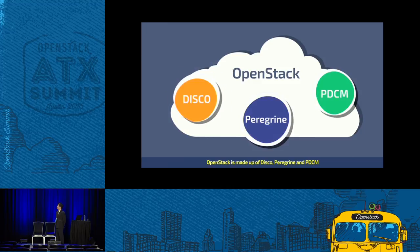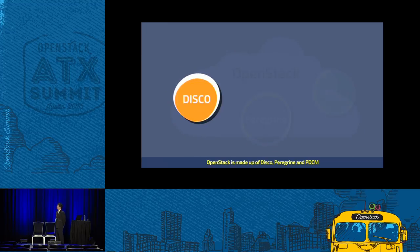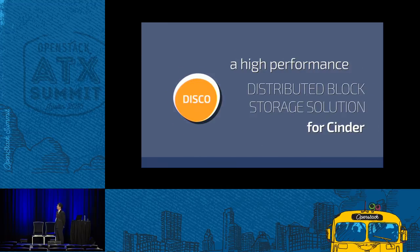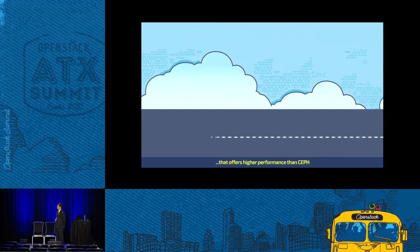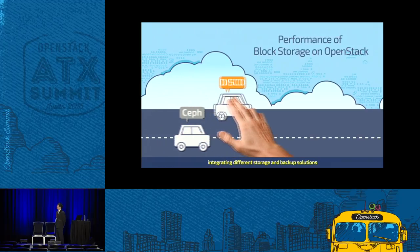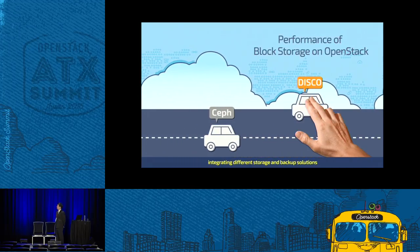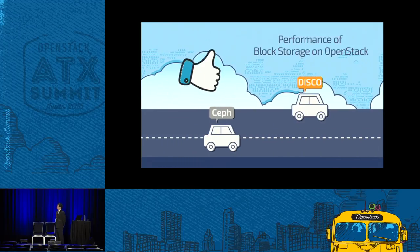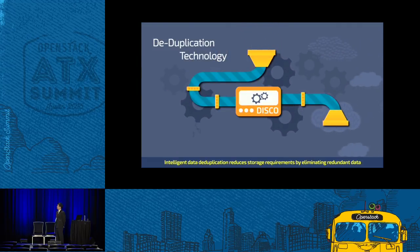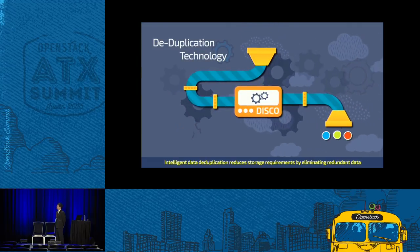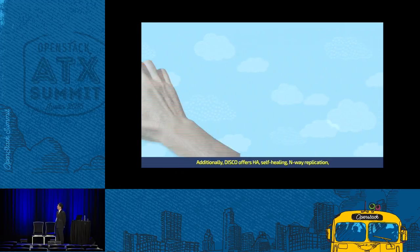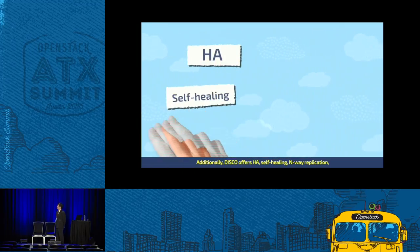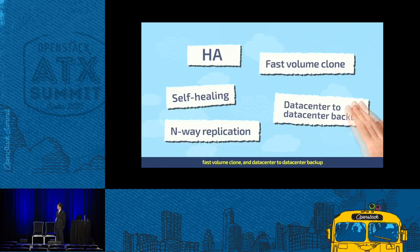IOD is made up of DISCO, Peregrine, and PDCM. DISCO is a high-performance distributed block storage solution for Cinder that offers higher performance than Ceph, integrating different storage and backup solutions. Intelligent Data Deduplication reduces storage requirements by eliminating redundant data. Additionally, DISCO offers HA, self-healing, N-Way replication, fast volume clone, and data center to data center backup.